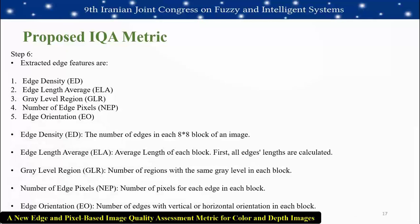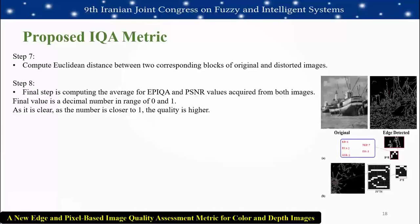Edge features are then extracted: edge density (ED) is the number of edges in each 8×8 block; edge length average (ELA) is the average length of each block; grey level region (GLR) is the number of regions with the same grey level in each block; number of edge pixels (NEP) is the number of pixels for each edge in each block; and edge orientation (EO) is the number of edges with vertical or horizontal orientation in each block. Step 7 is computing the distance between two corresponding blocks of the original and distorted images. The final step computes the average of EPIQA and PSNR values from both images.